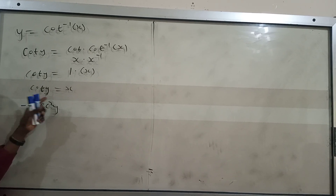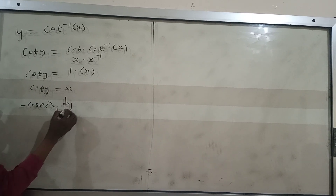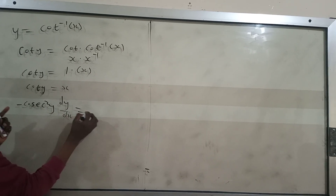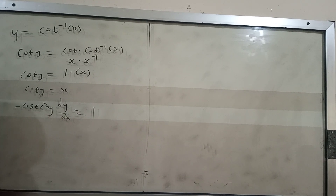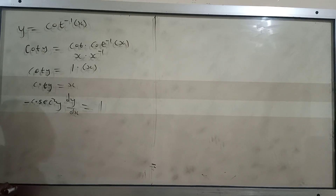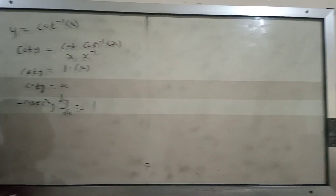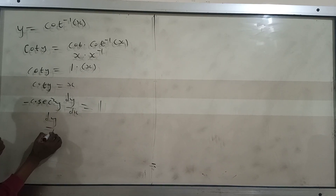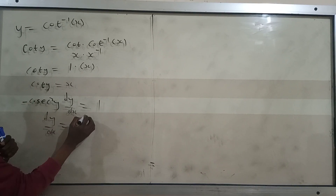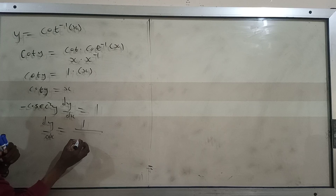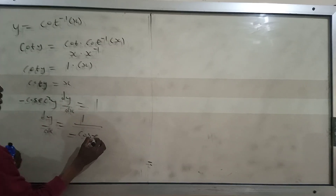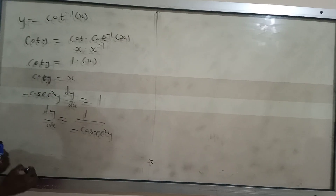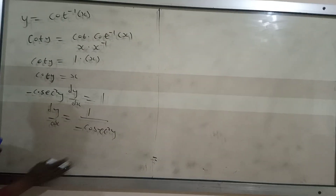Because of the y, we attach dy/dx to the left. So we get -cosec²(y) · dy/dx equal to 1. Then you divide both sides by -cosec²(y), so that you can make dy/dx the subject. You are going to get dy/dx equal to 1 over -cosec²(y).